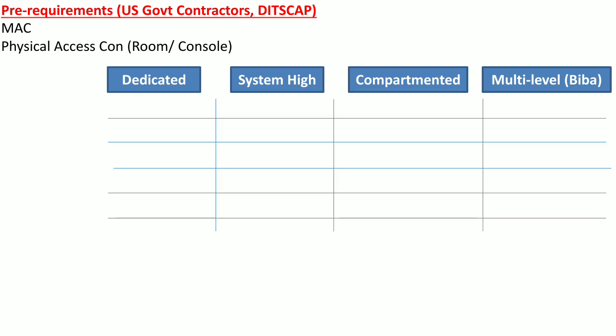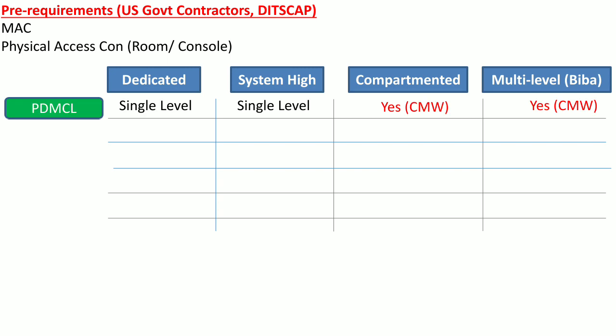There are certain attributes associated with these security modes of operations, and I will discuss these attributes one by one. The first attribute is PDM-CL, which stands for whether the system can process data at multiple classification levels. If an information system is deployed in dedicated or system-high security modes, it can process only data at a single classification level. But once deployed in compartmented or multi-level security modes, the system can process data at multiple classification levels.